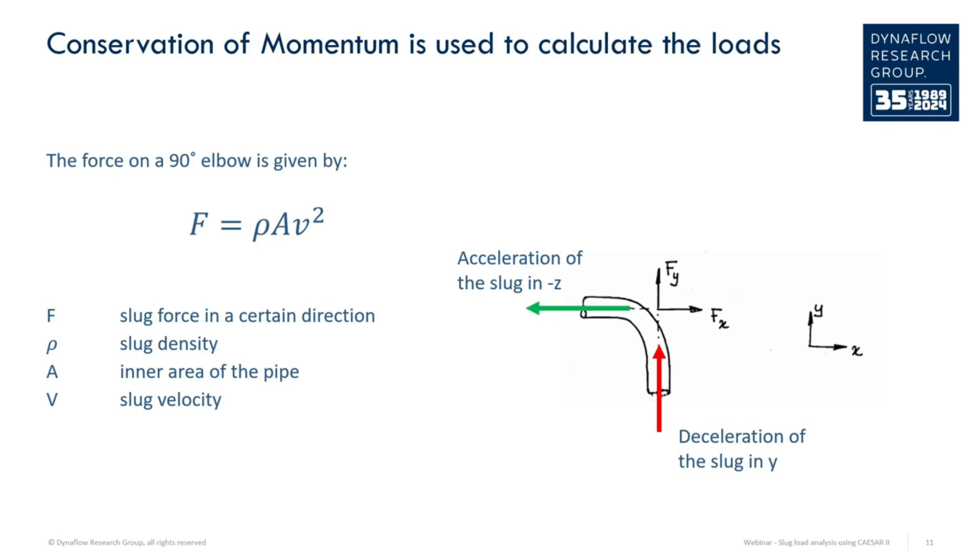The formula for the force on the elbow is therefore F equals rho times A times V squared, or force is equal to the density multiplied by the inner pipe area and the velocity of the slug squared.